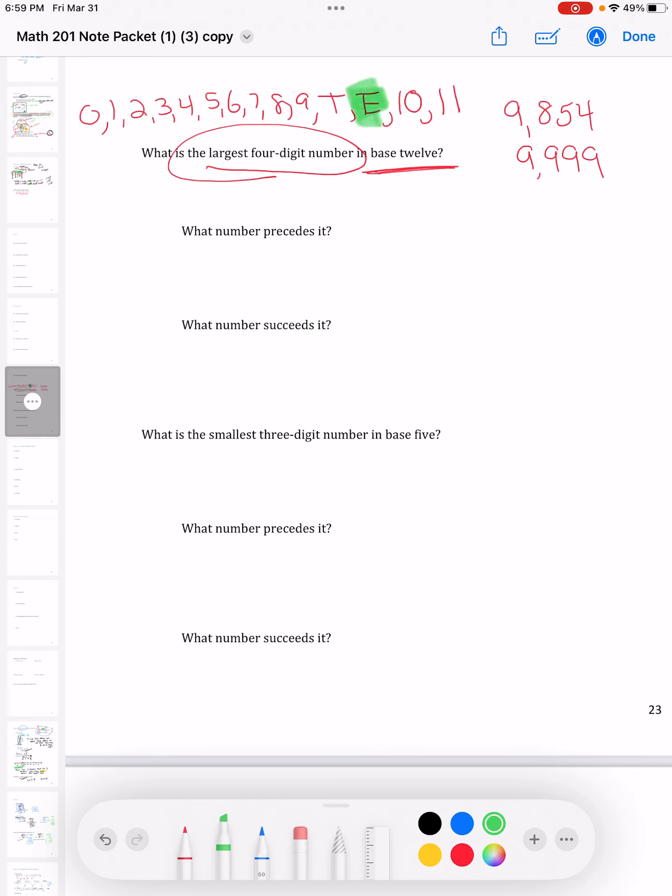So the largest single digit is E and I want four of those four digits. I'm not saying nine and E are the same number. They are not, but they both have the similar quality of being the largest single digit.